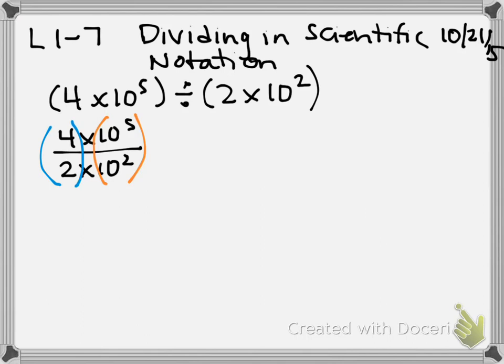What I am going to use is the associative property. We're going to do the math with the coefficients, so we're going to do 4 divided by 2. We're also going to do math with the like bases, the 10 to the 5th divided by the 10 squared. This shows up after we learned about rules on exponents because we have to use the rules for exponents on this one.